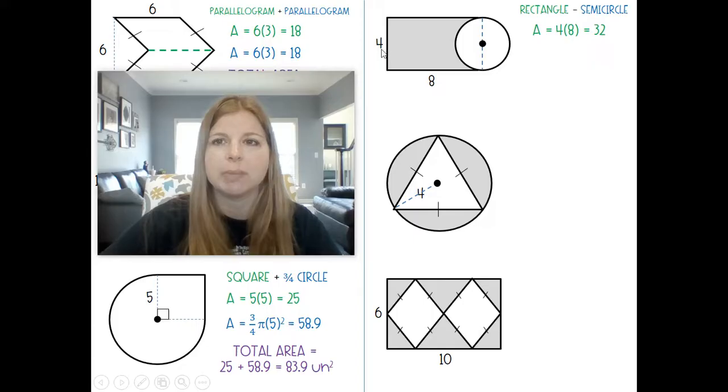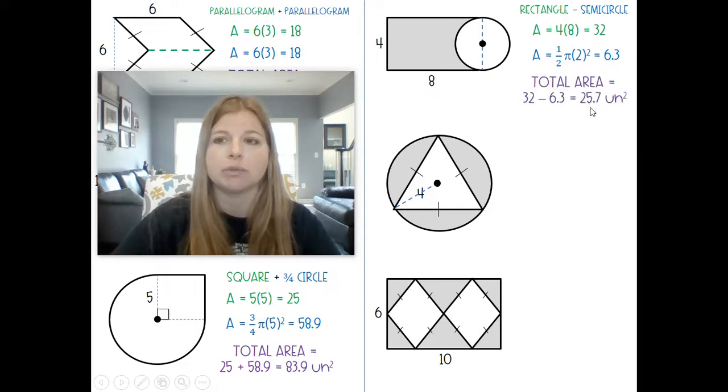So my area of my rectangle is pretty simple. Four times eight is 32. Now because this height here is four which would be the diameter of the circle it would tell me that my radius of the circle is two. So a semicircle would be one-half pi r-squared. So this is going to be one-half pi two-squared. Now it's going to give me 6.3. I'm then going to subtract those values and I get 25.7 units squared.